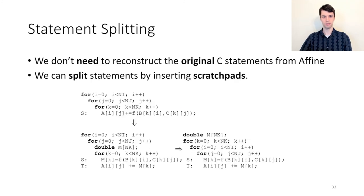In addition to simplifying reduction detection, the abstraction-spanning nature of Polygeist allows us to implement a new optimization: statement splitting. Specifically, when generating statements, we previously described how to reconstruct similar statements to the original C program. However, we don't need to reconstruct the original C statements, which may actually hinder scheduling. Consider the program below with a single statement S which computes F and adds the result into a matrix A. We can instead choose to insert a scratchpad M and split S into two statements which separately compute F and add the result into A.